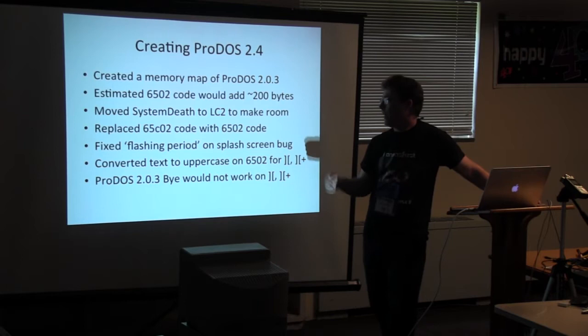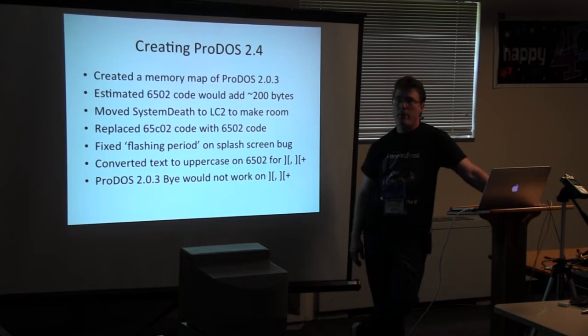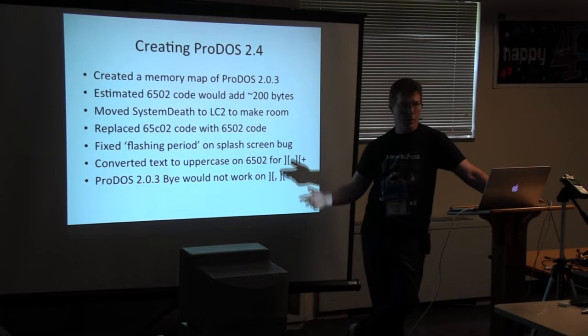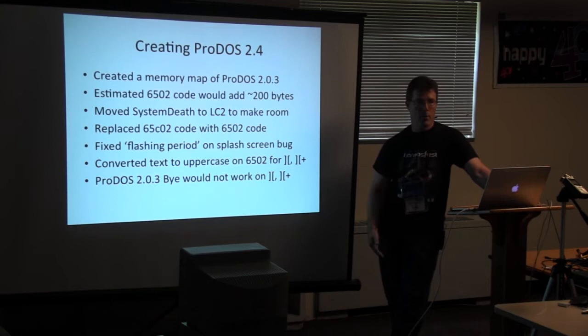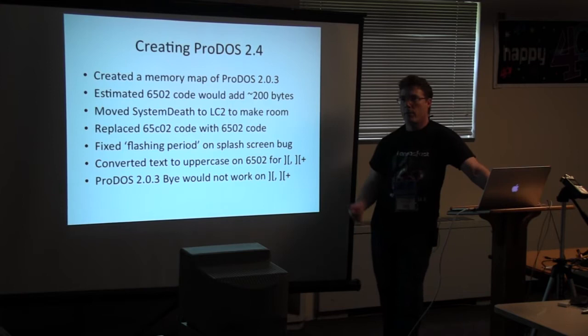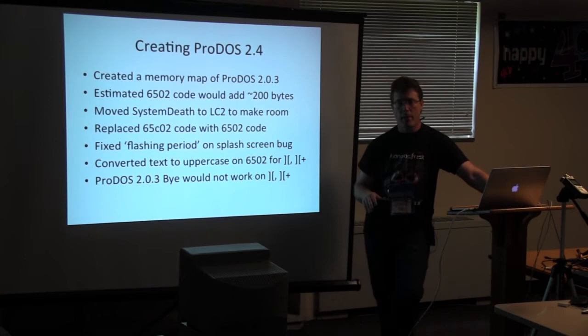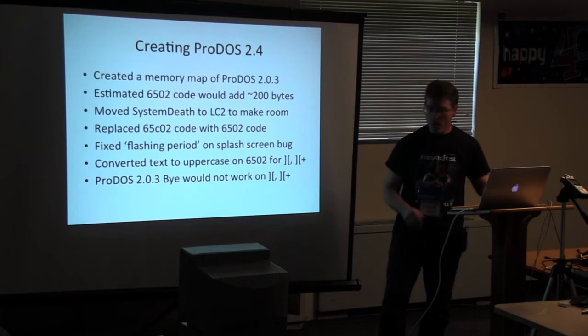I replaced the 65C02 code with 6502 code. It fixed the flashing period on the splash screen if you didn't have an 80-column card, and I converted text to uppercase because the Apple II Plus didn't have lowercase. Then it came time for retesting and I realized that the quick program in 2.03 was different from 1.9 — it wasn't going to work. That was the BI program, done by Alan Bird. It was very cool — 80 columns, used mouse text, a nice little UI, much better than typing slash commands.